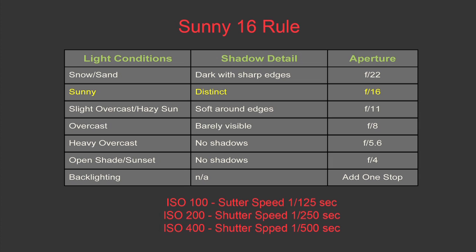Based on this rule we can also evaluate other conditions. For example, when it's snow or sand and you have a really bright scene, you can use f/22. When it's sunny, this is the Sunny 16 rule — f/16. When it's light overcast or hazy sun with soft round-edged shadows — f/11. When it's overcast and shadows are barely visible — f/8. When it's heavy overcast and there are no shadows — f/5.6. In open shade or at sunset — f/4.